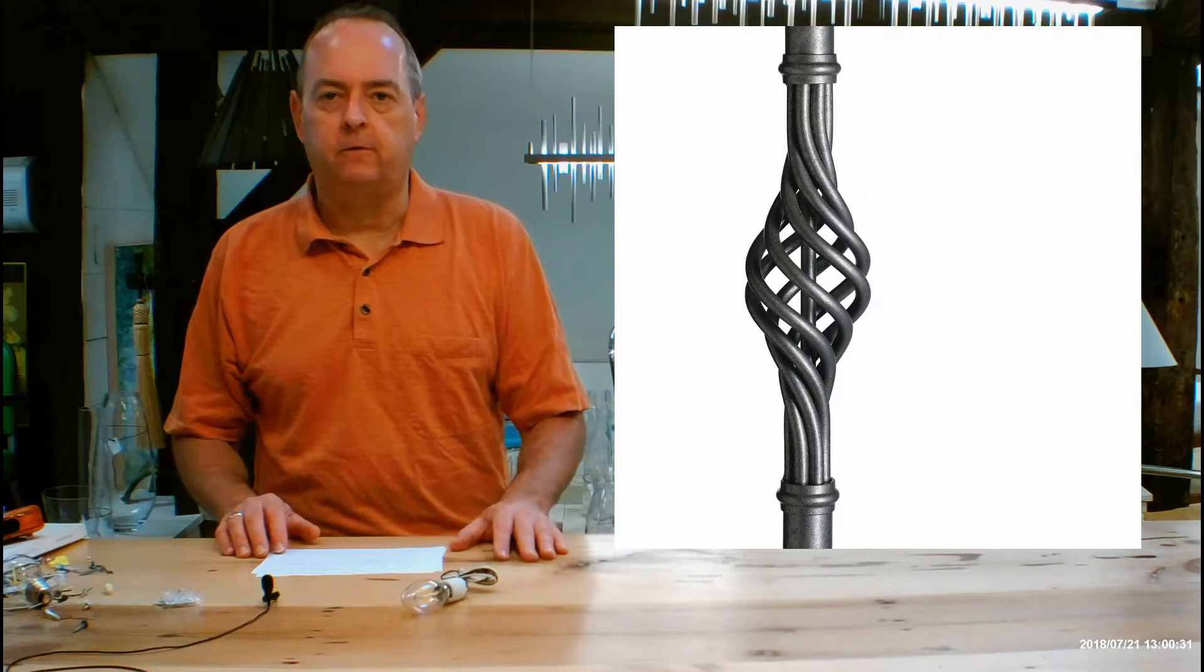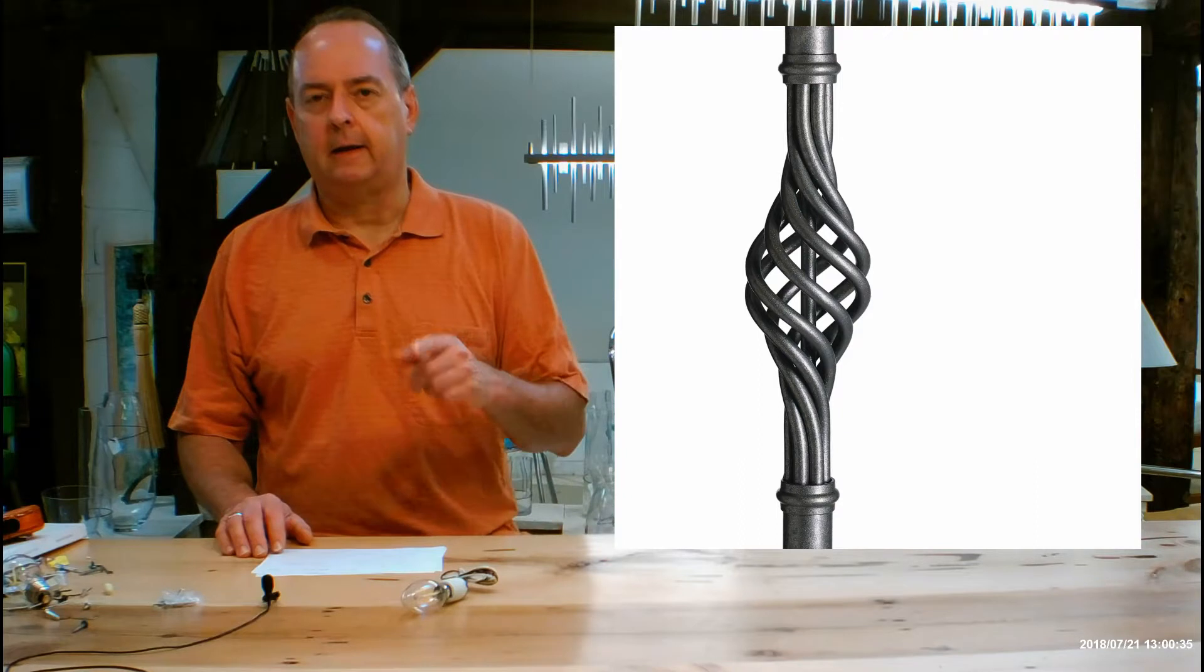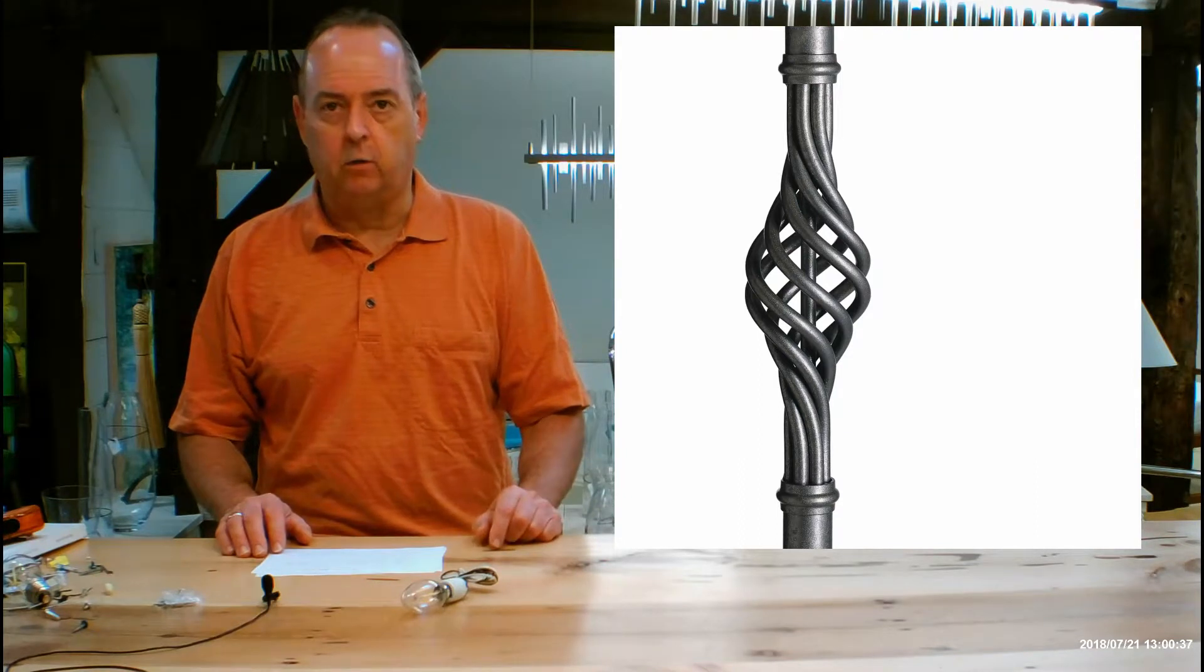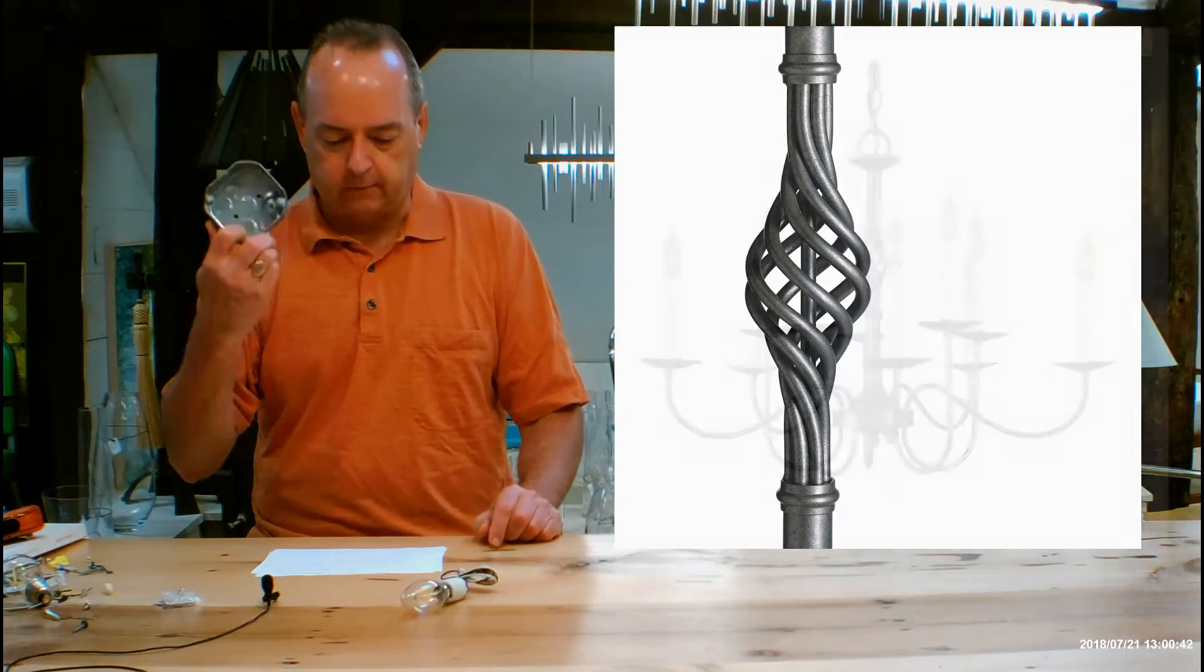It's going to ship with 36 inches of chain, 15 feet of wire, and a canopy kit on the ceiling. That canopy kit is 5 1⁄4 inches in diameter round, so it'll go over a standard 4-inch junction box just like this.